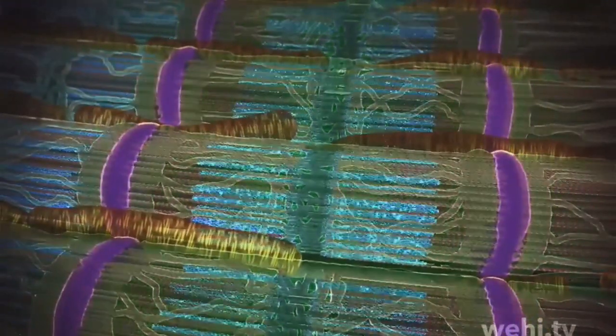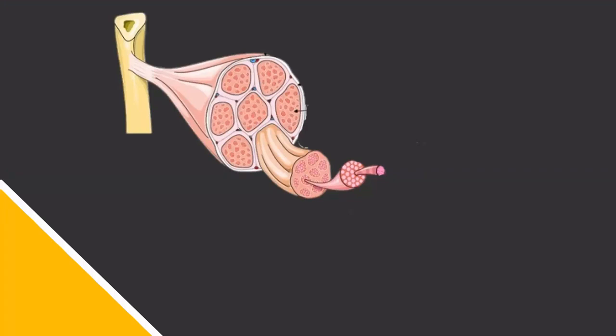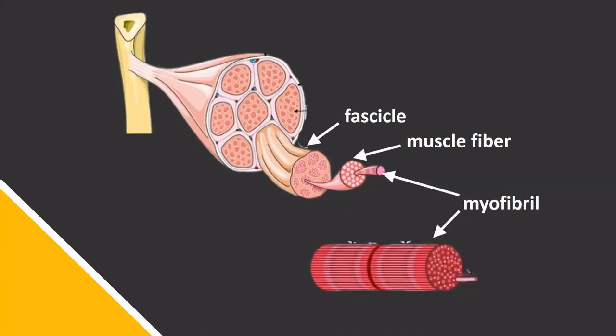Muscles are made up of small bundles of muscle fibers called fascicles, and muscle fibers contain contractile organelles called myofibrils, with sarcomeres arranged in series.